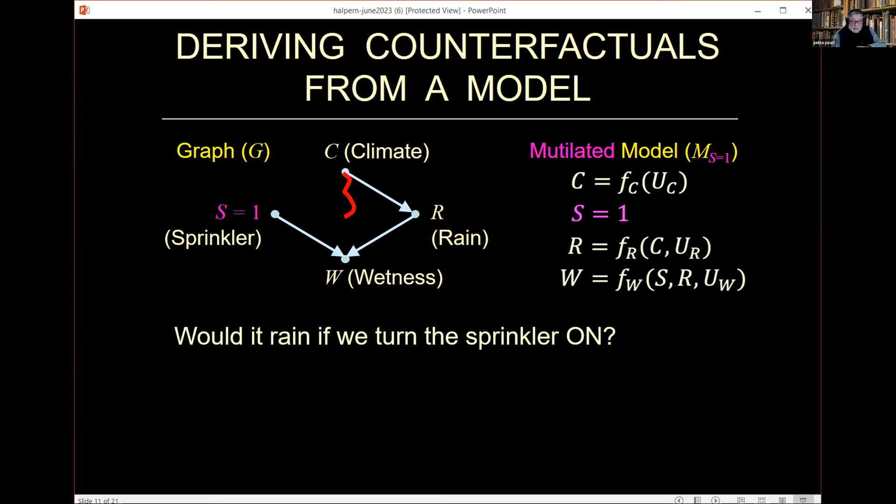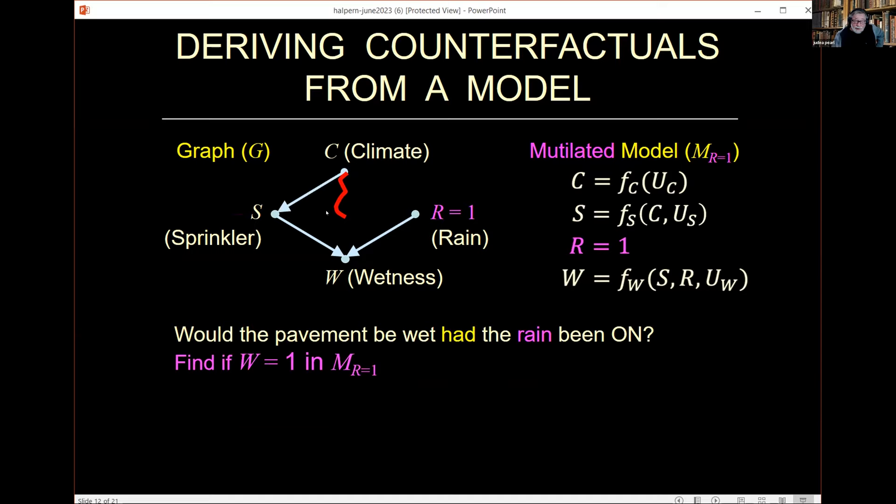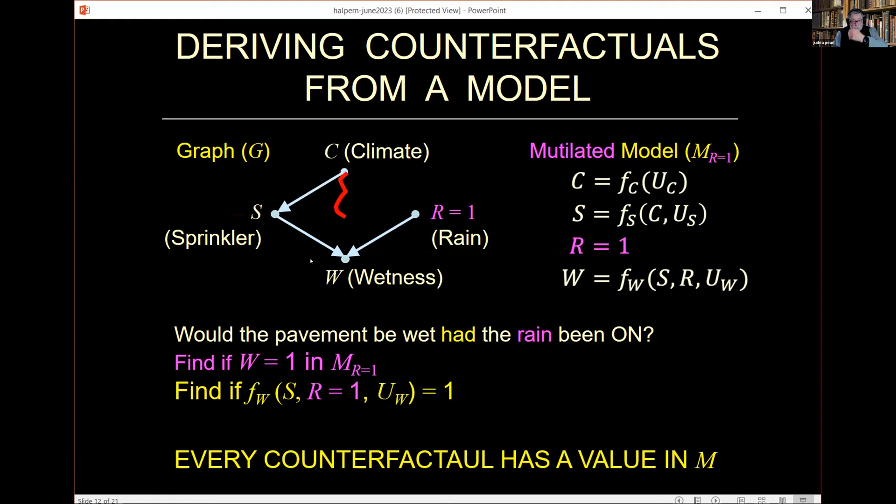What about if you ask a question that cannot be manipulated in reality? For instance, had the rain been on? Even in summer times, we don't have the physical means of manipulating rain, but we can still compute this counterfactual from the model, simply by doing the same to rain. I cut off the function between the rain and what previously controlled rain, the climate, and I imagine that I substitute the constant for rain, status equals one, and I solve for the equation.